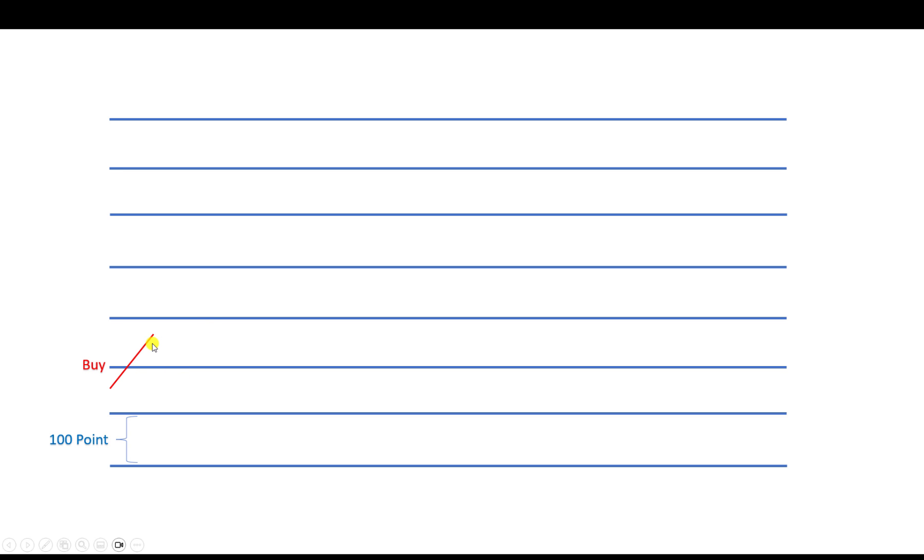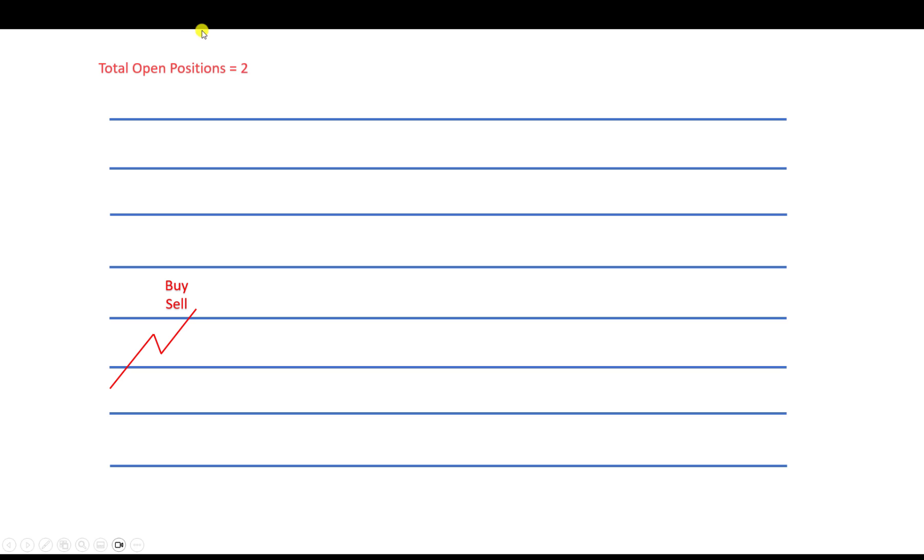How does it work? Imagine the price goes higher and we open a buy order — from that point we activate our grid strategy. When the price moves from one level to the next higher level, we open one buy and one sell order together, and cash out one buy. That buy is in profit by 100 points, so we close it. Now we have two open positions: one buy and one sell, and our profit is 100 points.